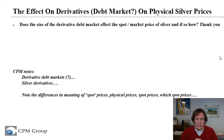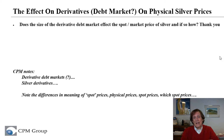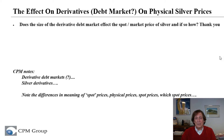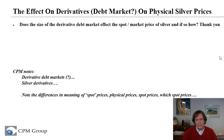Another important thing is: which spot price? You see marketers all the time saying 'we will sell you silver at spot' or '10 cents over spot.' What spot price are you talking about? Are you talking about the London spot price, the spot price in New York, or your own price? Because anybody can set a spot price, so you have to be very careful when people talk about spot pricing.